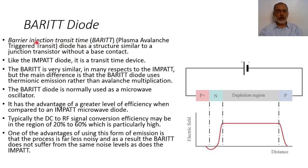The name breaks down as: Barrier - BAR, Injection - I, Transit Time - TT. This diode can also be called Plasma Avalanche Trigger Transit, so it can also be abbreviated as BARITT diode.